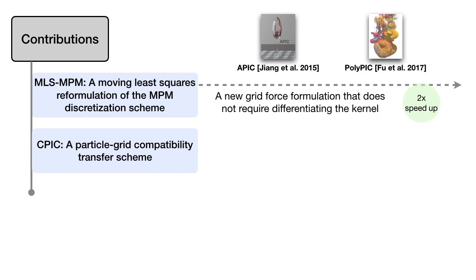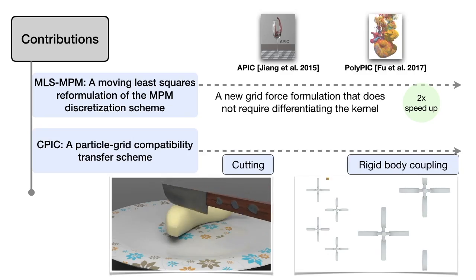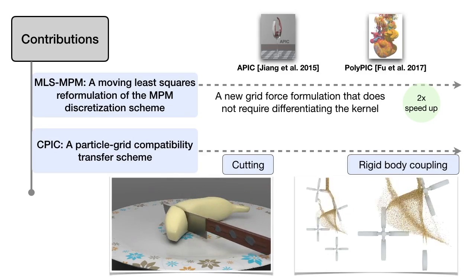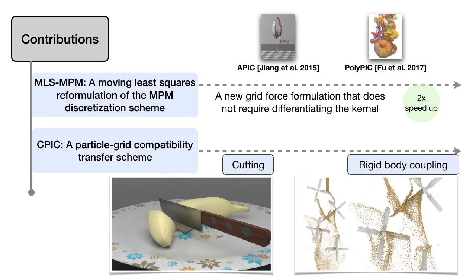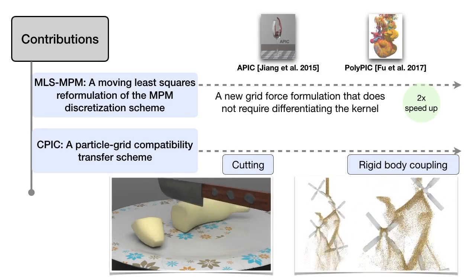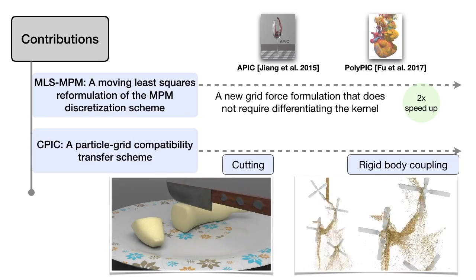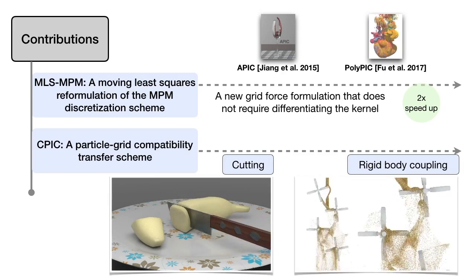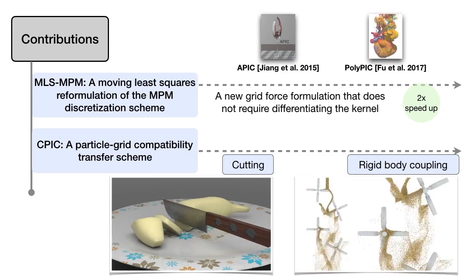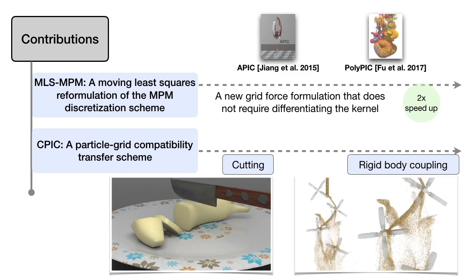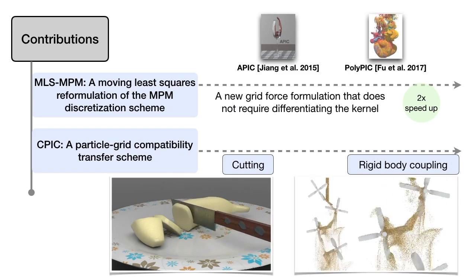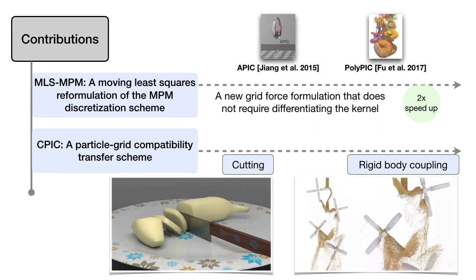We further introduce CPIC, a compatible particle and cell transfer scheme. CPIC augments traditional MPM with displacement discontinuity, which is essential to cutting simulations, and enables efficient two-way coupling between MPM particles and dynamic rigid bodies.